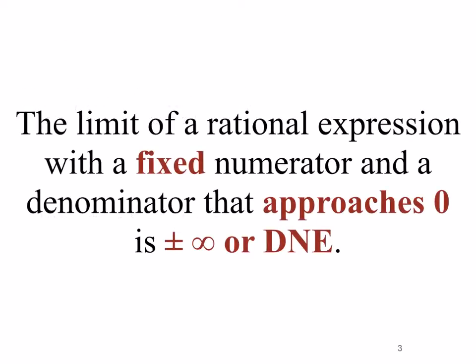The limit of a rational expression with a fixed numerator and a denominator that approaches zero is always going to be plus or minus infinity, referred to as a limit that does not exist. So again, if we have a constant number at the top and a denominator that approaches zero, then that limit is always going to be either plus or minus infinity. So let's consider an example.